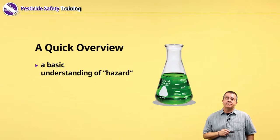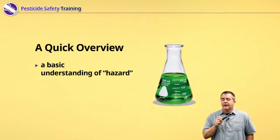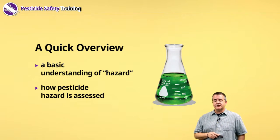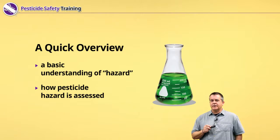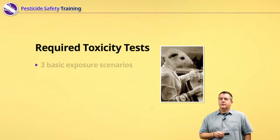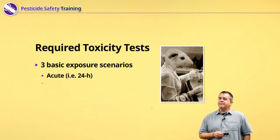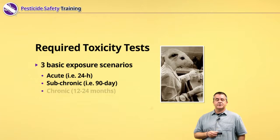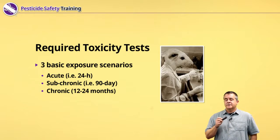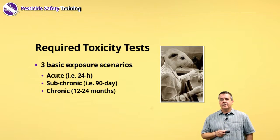Two principles we want to keep in mind here: a basic understanding of the word hazard and the methods by which we assess pesticide hazards. There are three basic exposure scenarios: acute, subchronic, and chronic.